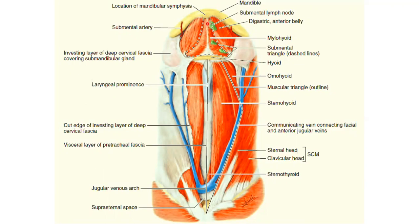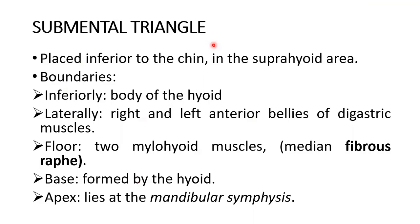The mylohyoid muscles attach at the median raphe. The mylohyoid muscles with the median raphe form the floor of the submental triangle, and also the floor of the mouth. If somebody asks you how the floor of the mouth is formed, mylohyoid is one of the muscles — I will tell you the rest in the picture later on.